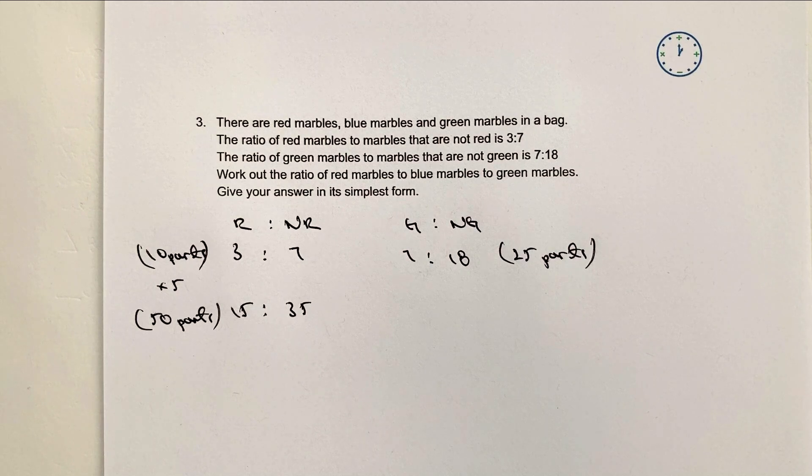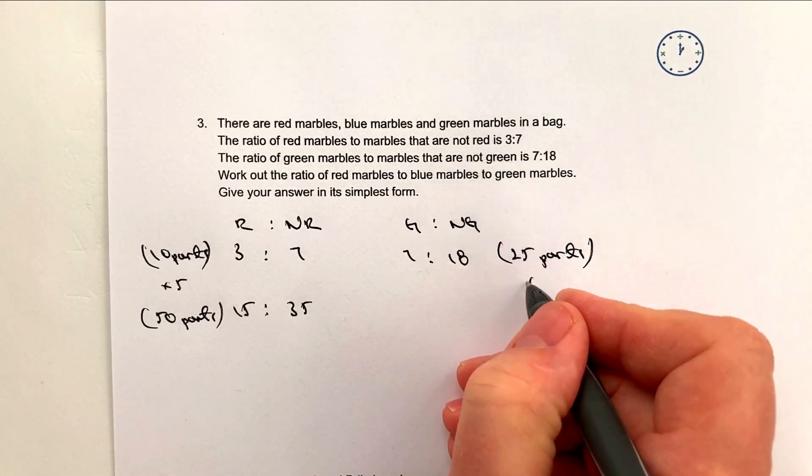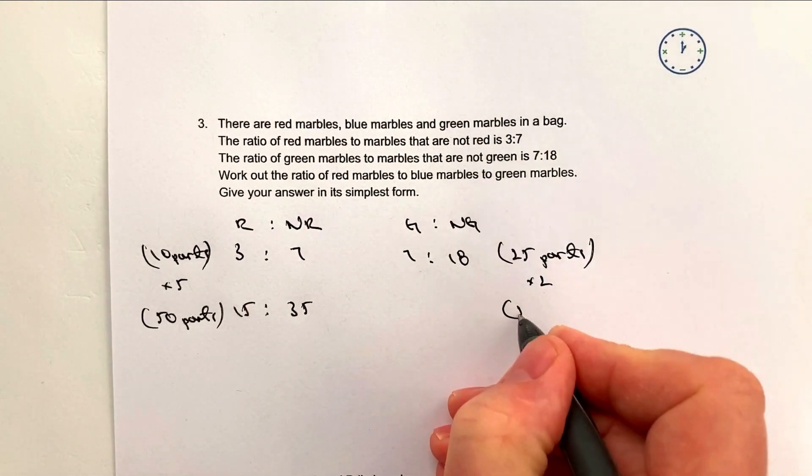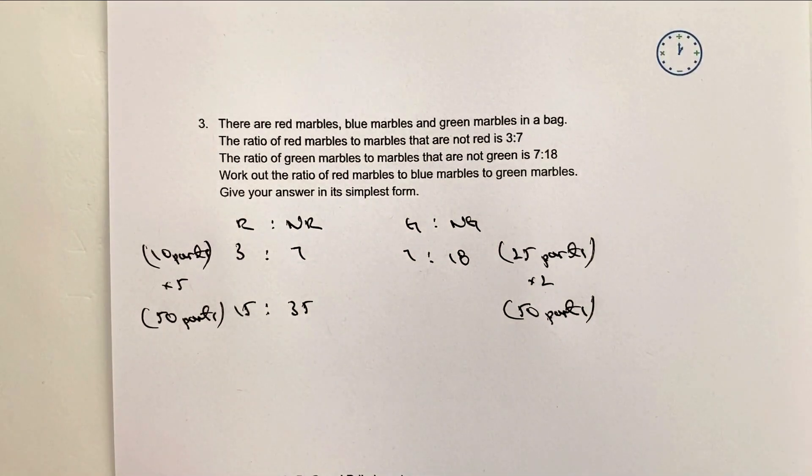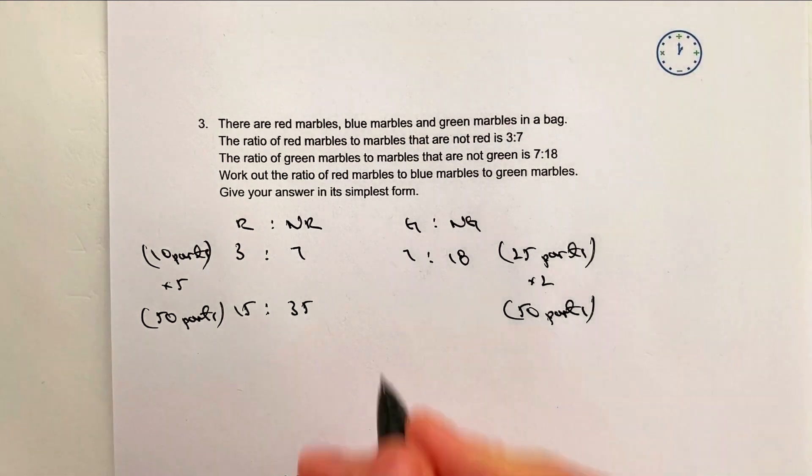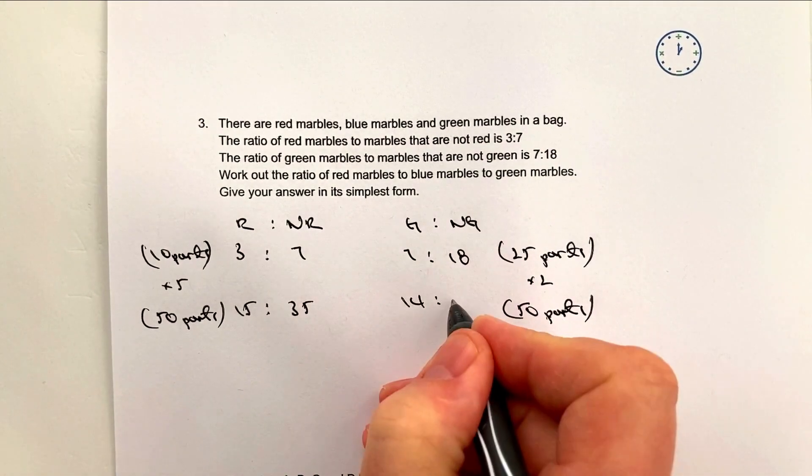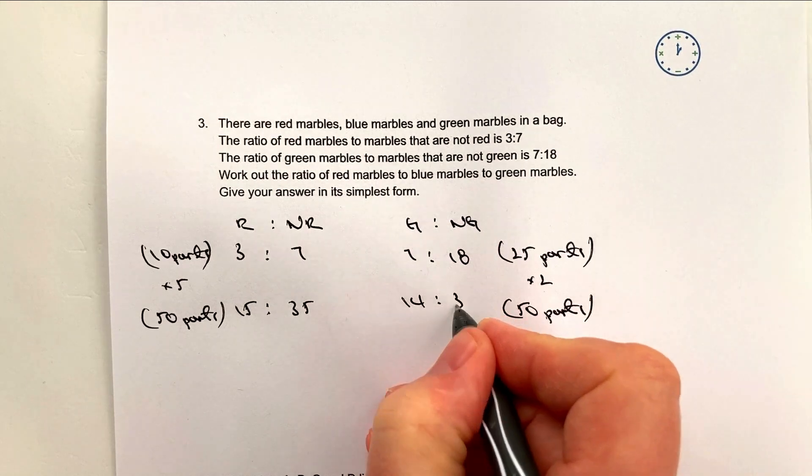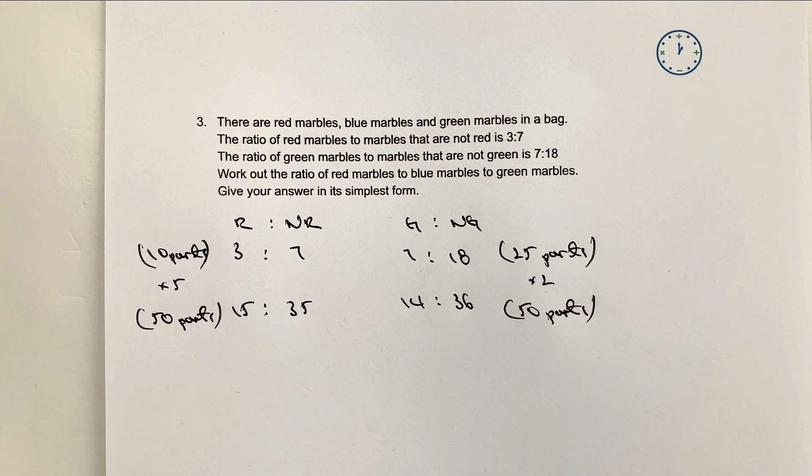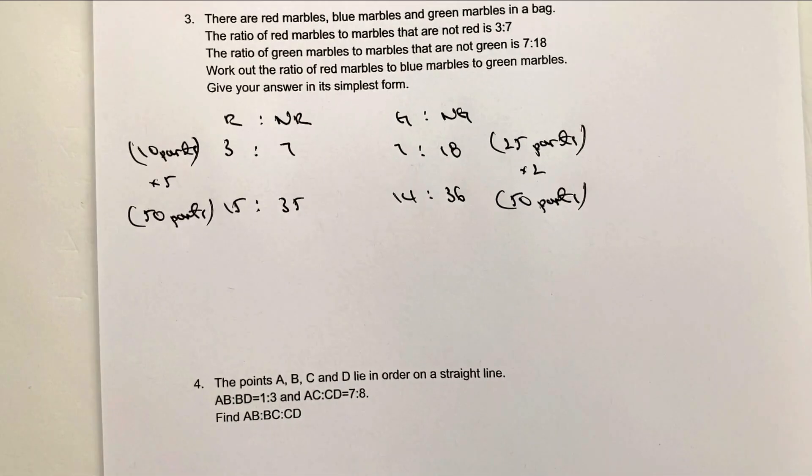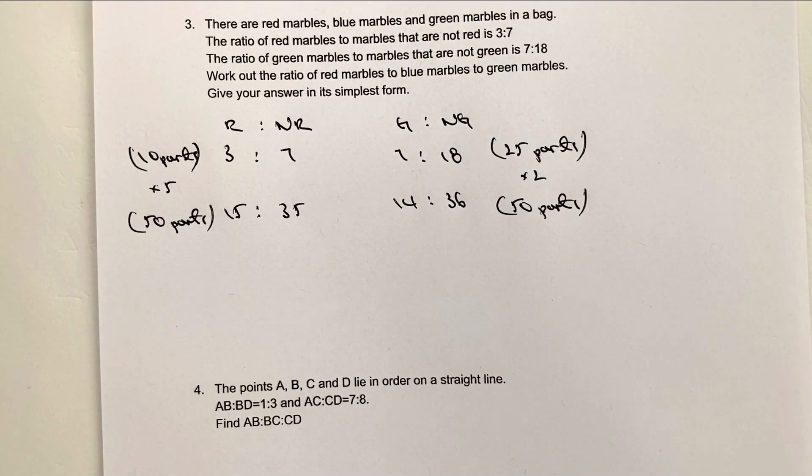Let's have a look now at green to not green, and again I want to make that 50 so I'm going to multiply it by 2. So this is now 50 parts. I've got the same number of parts for the ratio which is good. So that's going to be 14 and 18 times 2 is 36.